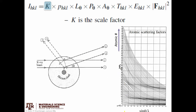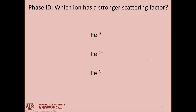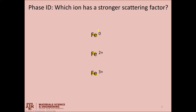Atomic scattering factors increase with atomic number — the number of electrons in the system — and they're also a function of the diffraction angle, expressed as sin(θ)/λ where λ is the wavelength of x-ray radiation. As a quick test: which of these ions has the strongest scattering factor — metallic iron, Fe²⁺, or Fe³⁺? The answer is neutral iron, because Fe²⁺ and Fe³⁺ have fewer electrons and a smaller electron cloud.